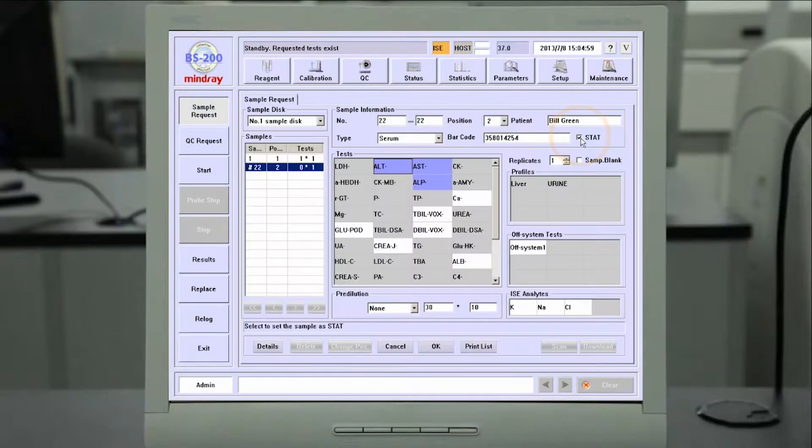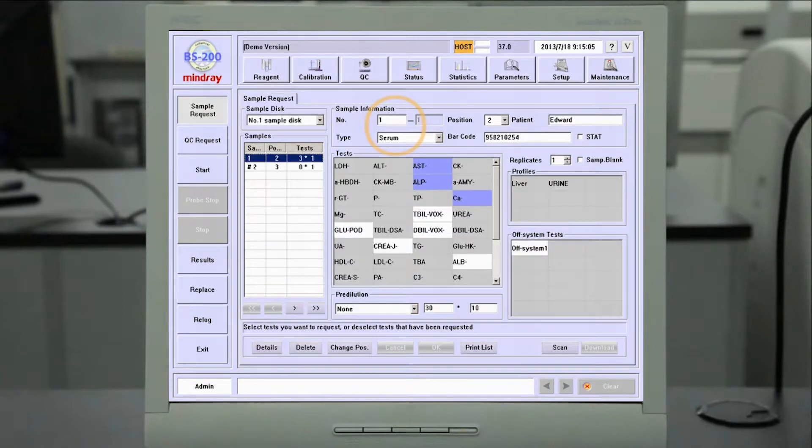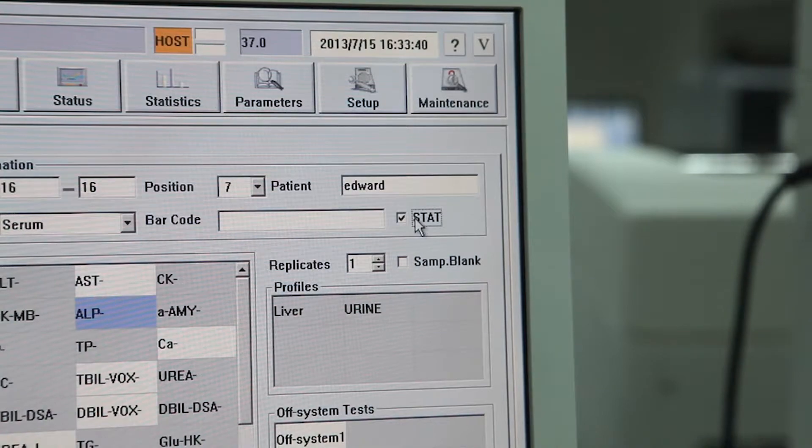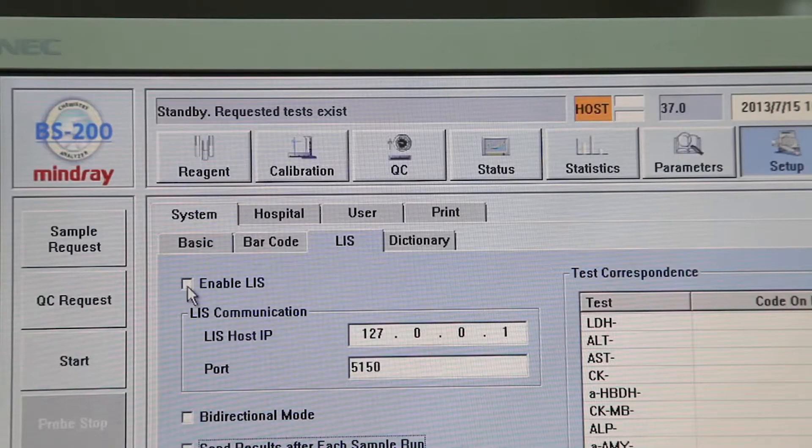The BS200 software supports STAT, routine priority, and batch testing. STAT samples may be programmed in the sample request screen or through the LIS system.